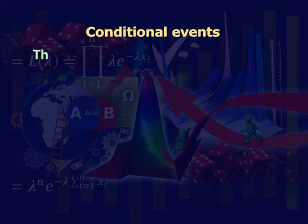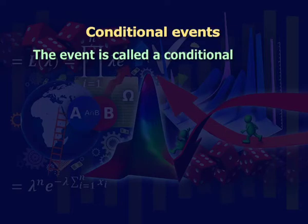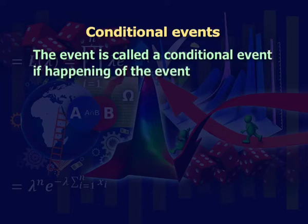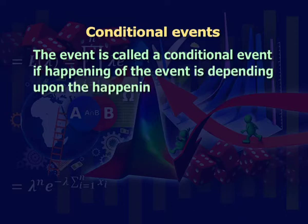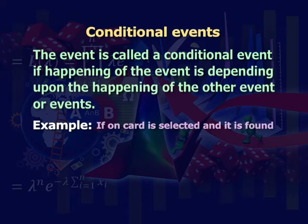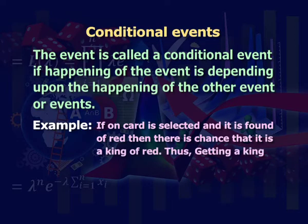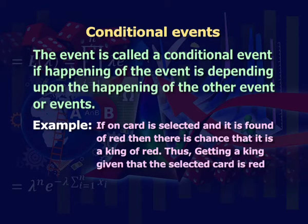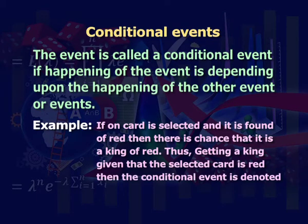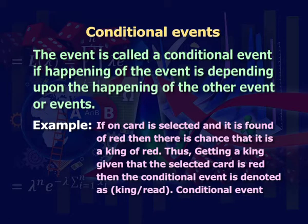Conditional events. The event is called a conditional event if the happening of the event depends upon the happening of the other event or events. For example, if one card is selected and it is found to be red, then there is a chance that it is a king of red. Thus, getting a king given that the selected card is red is the conditional event, denoted as king given red, or generally as A given B.